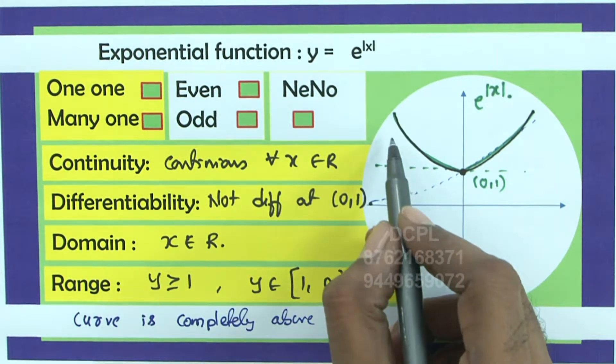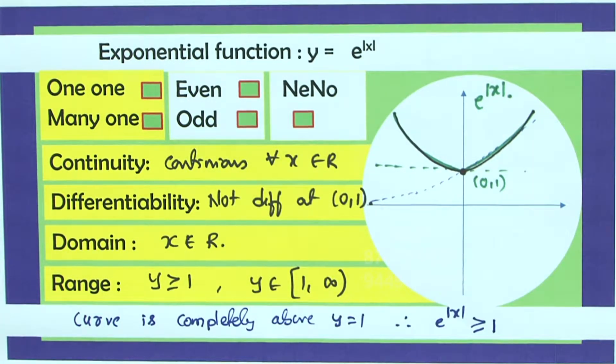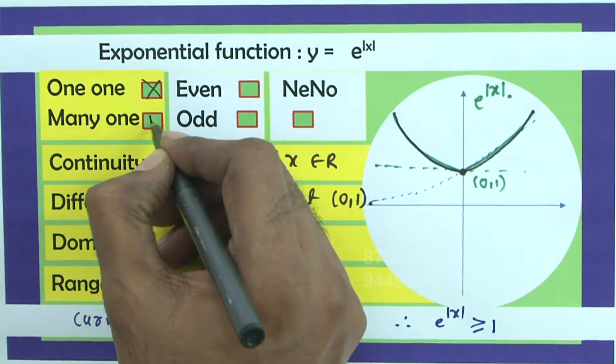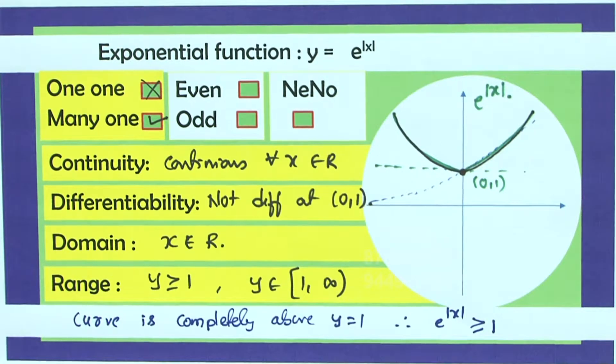And if you draw a line parallel to x axis, it meets a graph at more than one point rather two points. It is not 1-1, it is many-1. There is no word like 2-1. So we have to use either many-1 or 1-1. So it is many-1.